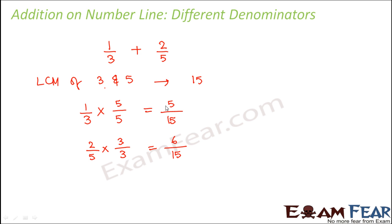Now you can very easily add these two. 1 by 3 plus 2 by 5 can be written as 5 by 15 plus 6 by 15. Now you have the same denominator format, so you can just add the numerators. 5 plus 6 divided by 15 would be 11 by 15. This is how we find the sum when you have different denominators.